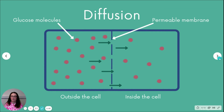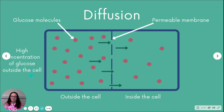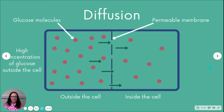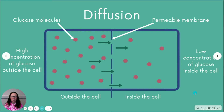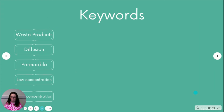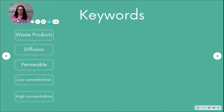Inside the cell there are very few molecules; outside the cell there are a lot of glucose molecules. Glucose is just one example — that's the one we're using today. Where you've got a high concentration of glucose, that means where there are lots of glucose molecules — in this example, that's outside the cell. Inside the cell you've got a low concentration of glucose molecules. So those molecules will diffuse from the area of high concentration to the area of low concentration.